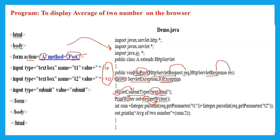To read the values passed by the client, we use the getParameter method, which belongs to the request interface. We pass the name T1 to getParameter to retrieve the value 10, which comes back as a String. Similarly, we call getParameter with T2 to retrieve the value 20, also in String form.